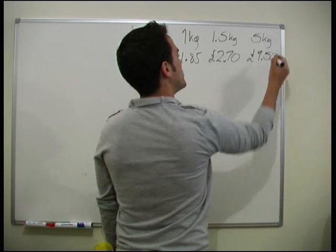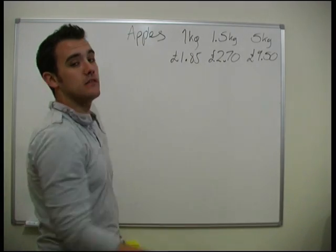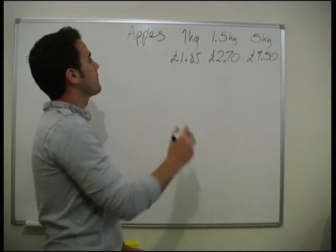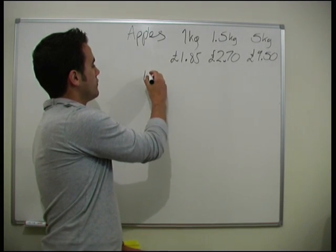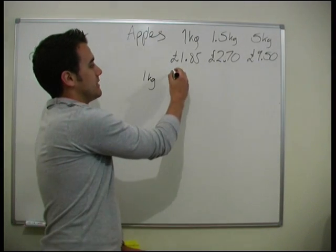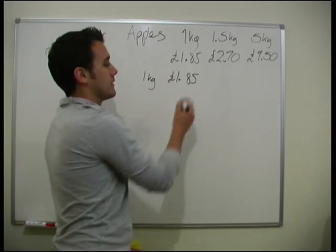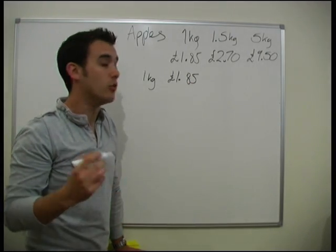So we need to see which one out of these is the better value. So again, let's compare 1kg. So what is the cost of 1kg? Obviously it is £1.85 for the 1kg bag. Luckily we already have that. We can minimize how much work we need to do for the better.